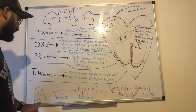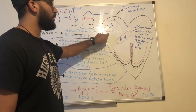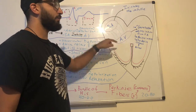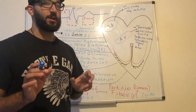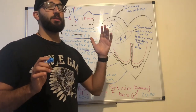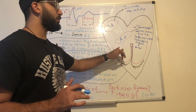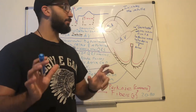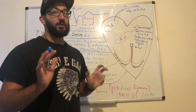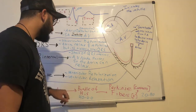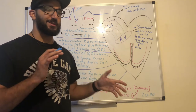The SA node initiates the impulse at a rate of 60 to 100 beats per minute. That impulse is then sent to the AV node. The AV node is considered to be the gatekeeper — it regulates the impulse sent from the SA node. It pauses that impulse so the atria can contract and relax. After the AV node has regulated the impulse, it is sent to the bundle of His, where it is regulated at 40 to 60 beats per minute.